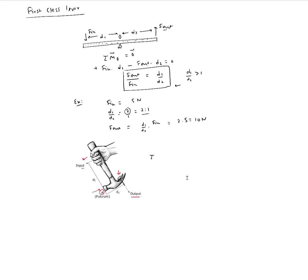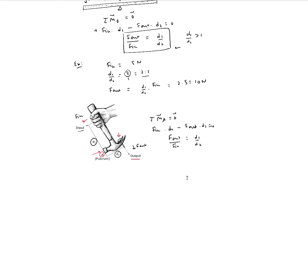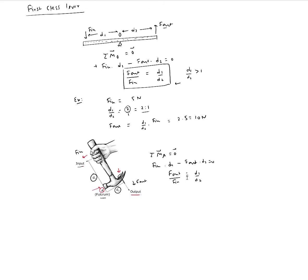Taking the moment about point A: F-in times D1 minus F-out times D2 equals zero, giving the same relationship F-out over F-in equals D1 over D2. As long as D1 is greater than D2 - meaning the input force is applied at a larger distance from the fulcrum than the output - we have force magnification.